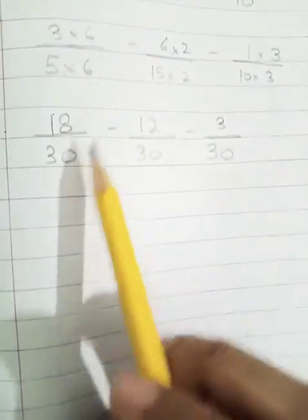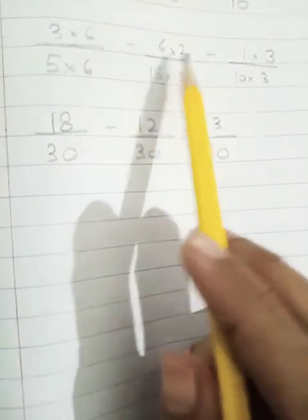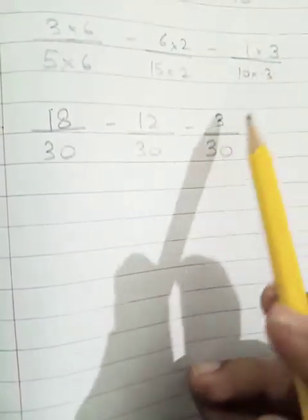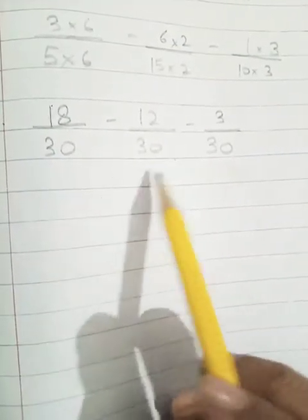We will multiply 3 upon 5 by 6 minus 6 upon 15 by 2 minus 1 upon 10 by 3. 3 times 6 is 18, 5 times 6 is 30. Minus sign. 6 times 2 is 12, 15 times 2 is 30. Minus sign. 1 times 3 is 3 and 10 times 3 is 30. Now we have same denominator. Just subtract these terms.